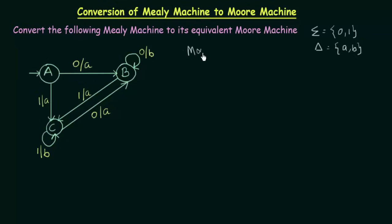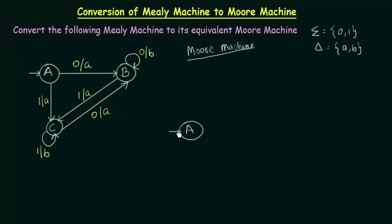Now we will convert this to its equivalent Moore Machine. First of all, we will start with the starting state, which is state A. On input 0, state A goes to state B, and what is the output that it gives? It gives output A.